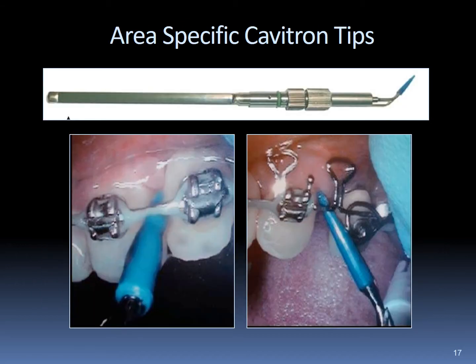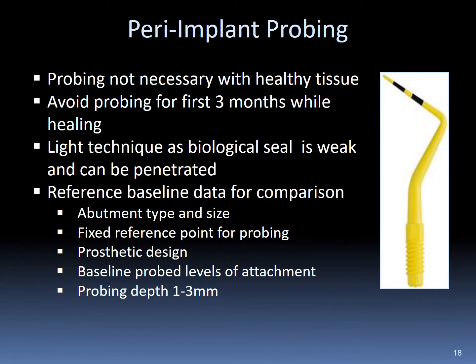Specially designed Cavitron tips are recommended and should only be used on implants. When conducting peri-implant probing procedures, it is not necessary to measure healthy appearing tissue. During the first three months following implant placement, it is recommended not to probe and disturb the area, as the biological seal is weak and probing may disturb the healing process and penetrate the tissue integration underway. Reference baseline data includes the abutment type used, fixed reference points for probing depths, prosthetic design, and baseline attachment levels. Probing depths between 1 and 3 millimeters are measurements used to assess implant health at re-care visits, and light probing techniques should always be used.